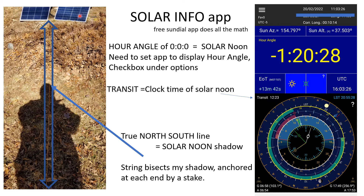Here are my solar panels, here's my shadow, and there's a string with a peg in the ground here. The string bisects my shadow — that is my true north-south line.